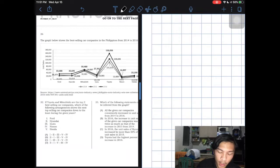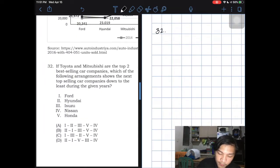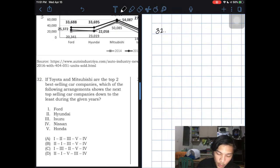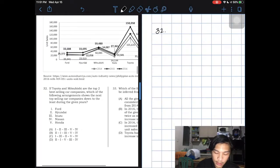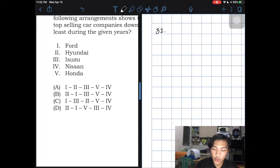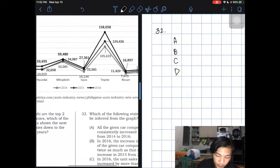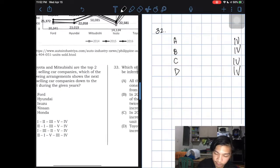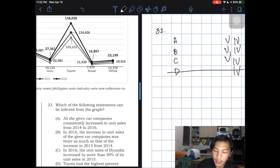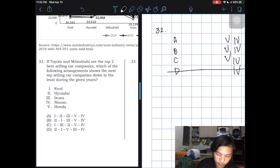The graph below shows the best-selling car companies in the Philippines from 2014 to 2016. Number 32, if Toyota and Mitsubishi are the top two best-selling car companies, which of the following arrangements shows the next top-selling car companies down to the least during the given years? So the question is, who are the ones following them in decreasing order? Check the choices. All choices say the lowest is Nissan. The next to it is Honda, which is 5. Automatic you can eliminate letter D.